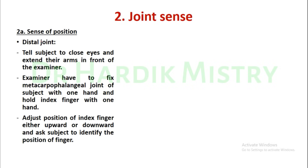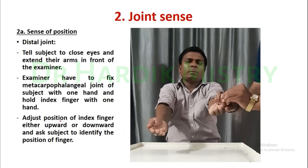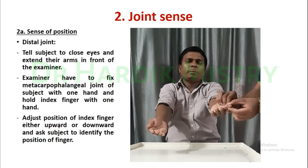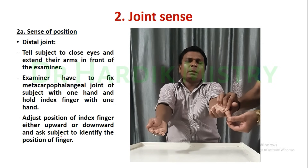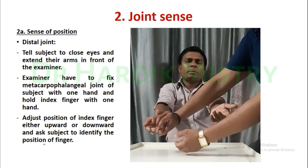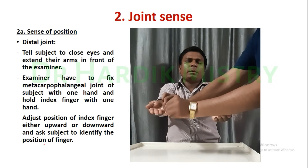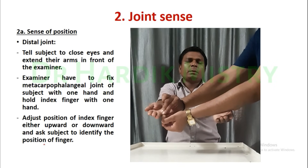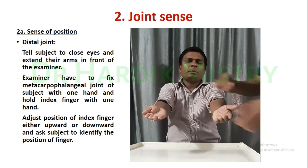Second, sense of position for the distal joint. Tell the subject to close their eyes and extend their arms. The examiner fixes the metacarpophalangeal joint of the subject with one hand and holds the index finger with the other hand. Adjust the position of the index finger either upward or downward and ask the subject to identify the position of the finger.